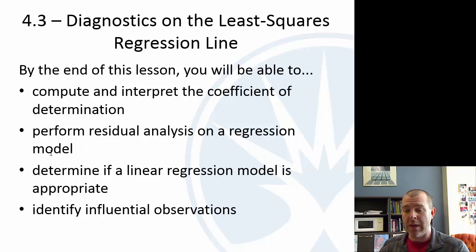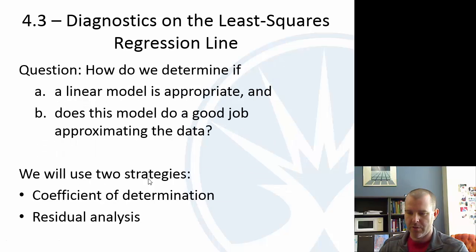Okay, 4.3. What we want to do now is essentially we have this least squares regression line and we can use StatCrunch to find it. The question we have is, is it a good line? How do we know? And so that's what we're going to do now.